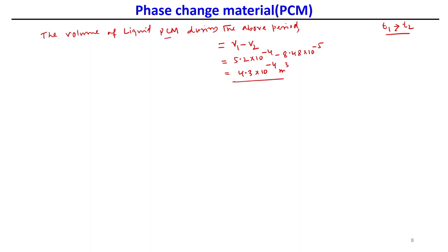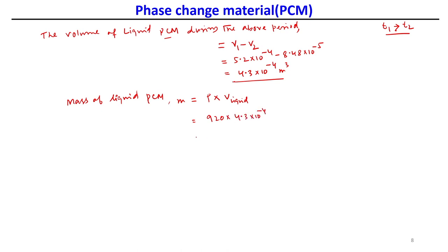Knowing the density, we can find the mass of liquid PCM. Mass = ρ × V_liquid = 920 × 4.3×10⁻⁴ = 0.39 kg. This is how we determine how much liquid PCM is produced during the melting period.